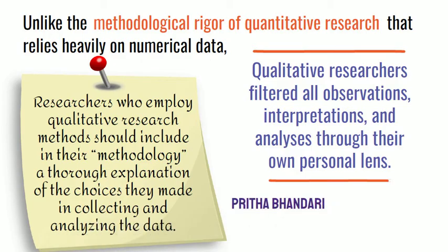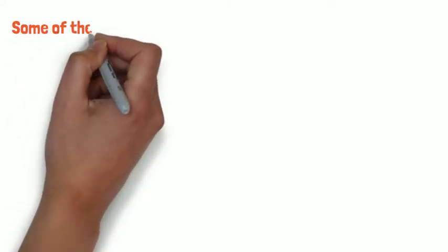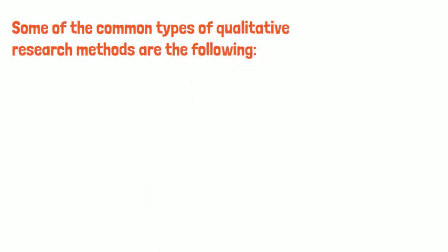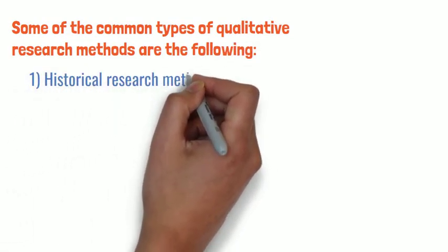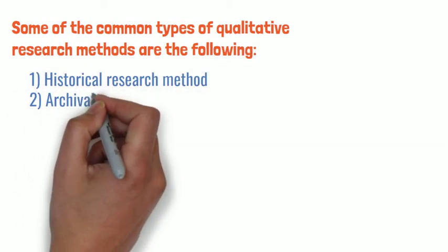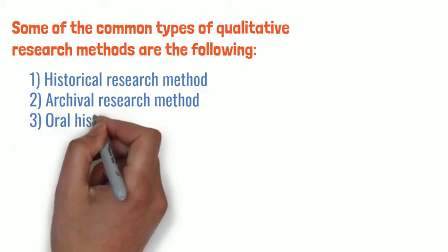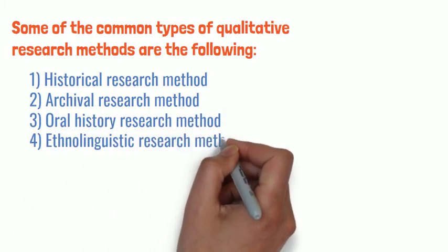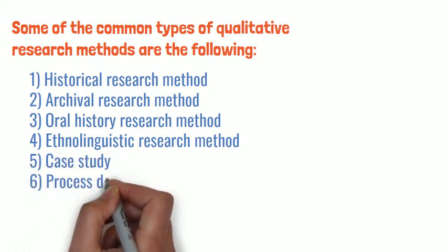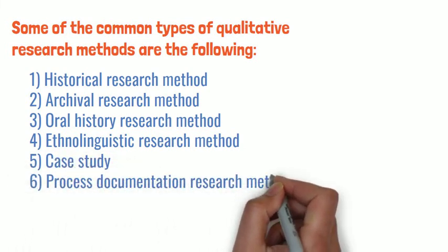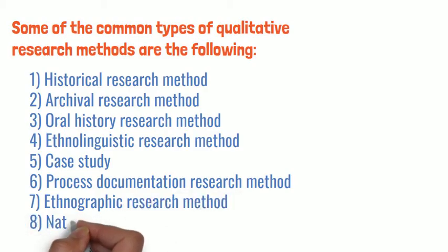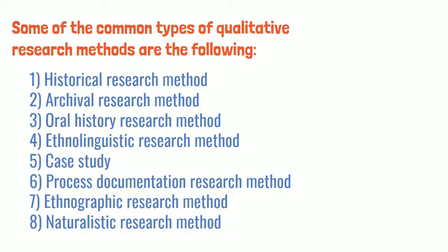See Pritha Bhandari, An Introduction to Qualitative Research. Some of the common types of qualitative research methods are the following: historical research method, archival research method, oral history research method, ethnolinguistic research method, case study, process documentation research method, ethnographic research method, and naturalistic research method.